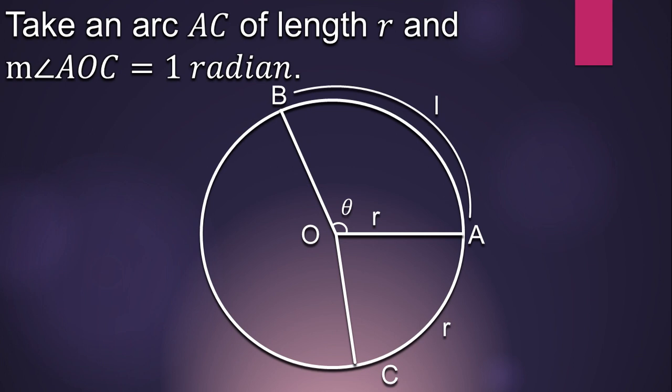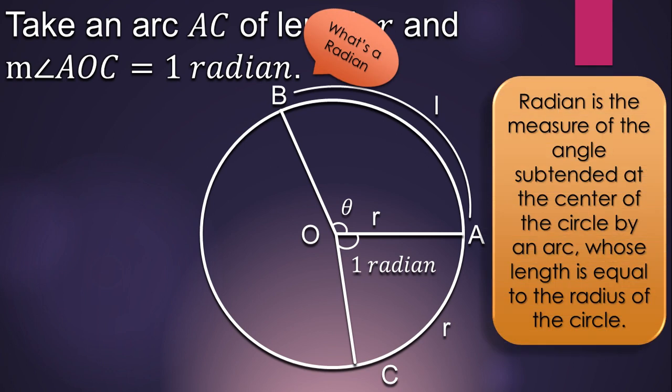This time, the measure of the central angle AOC that intercepts the arc AC is 1 radian. Let's recall the definition of radian here. Radian is the measure of the angle subtended at the center of the circle by an arc whose length is equal to the radius of the circle.